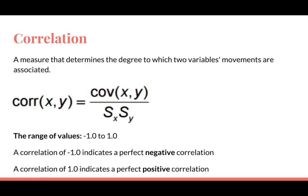Correlation is a measure that determines the degree to which two variables' movements are associated. The formula for correlation includes the covariance found before and divides it by the product of the two standard deviations for each variable.